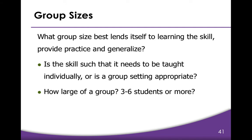Here are some guiding questions to help us think about group sizes: What group size best lends itself to learning the skill, providing practice, and generalization? Is the skill such that it needs to be taught individually, or is a group setting appropriate? How large of a group — three to six students or more? Answering these questions helps teachers determine what classroom spaces are needed. In this chapter, we discussed staying organized in case management and considerations while putting groups together. In the next chapter, we'll discuss scheduling and classroom management.